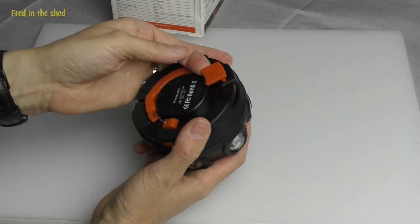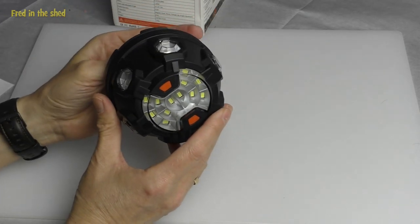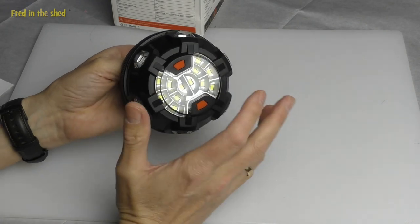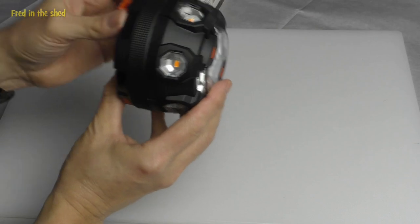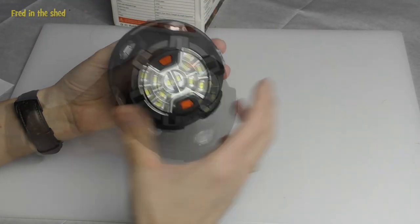And then another feature, which I think is quite good, has another little clip that comes out the side here. And this is for attaching it to an emergency breakdown triangle. Now here in the UK, those little triangles are optional, but if you go into Europe and abroad, they're compulsory. So you could then clip this onto your breakdown triangle to make yourself that little bit more visual.